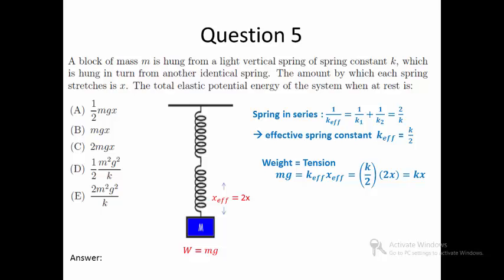Lastly, remember that the elastic potential energy is half k effective times the square of x effective. So, by plugging in k over 2 and 2x, we get kx squared.